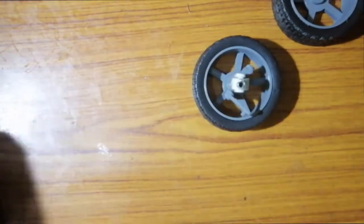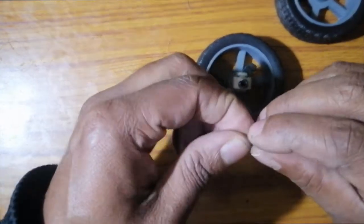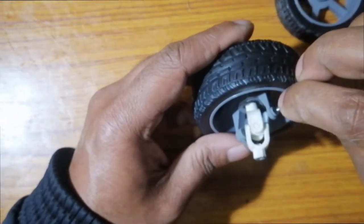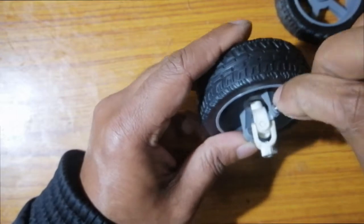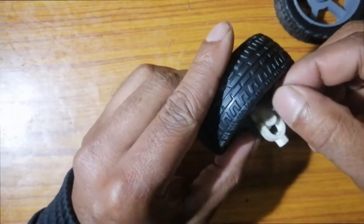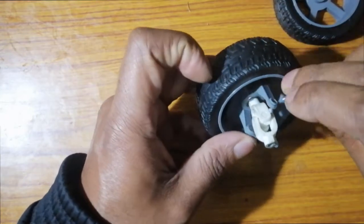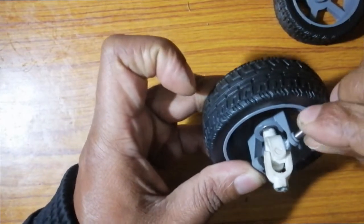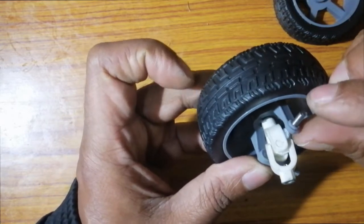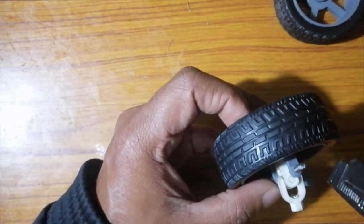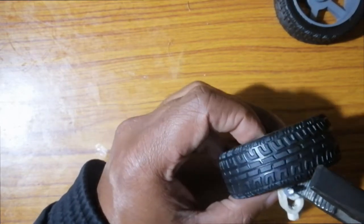Now let's place the other portion of the assembly. Before that, we need to secure the position of the assembly with a locking mechanism. For that I'm using a piece of 3mm rod.